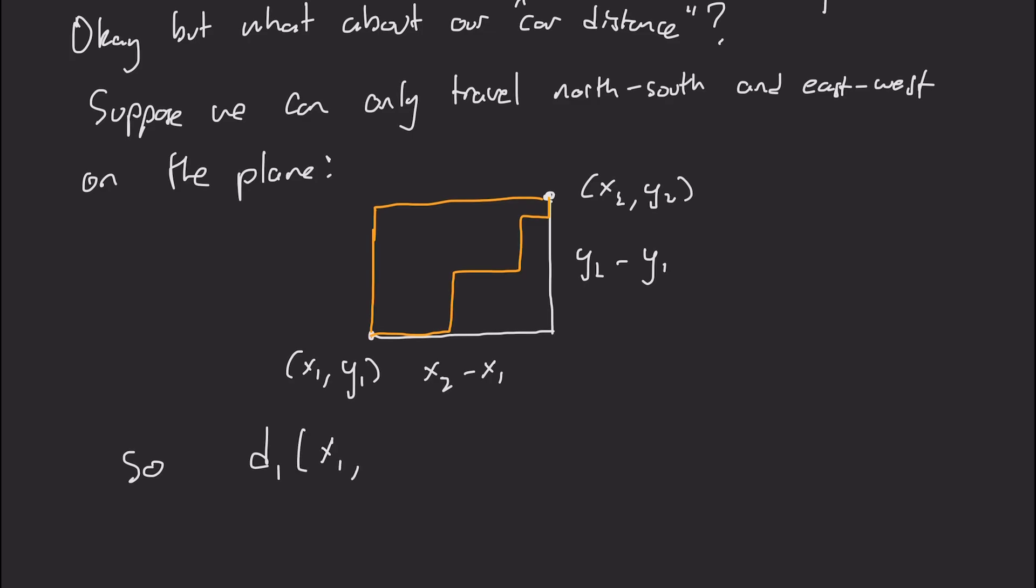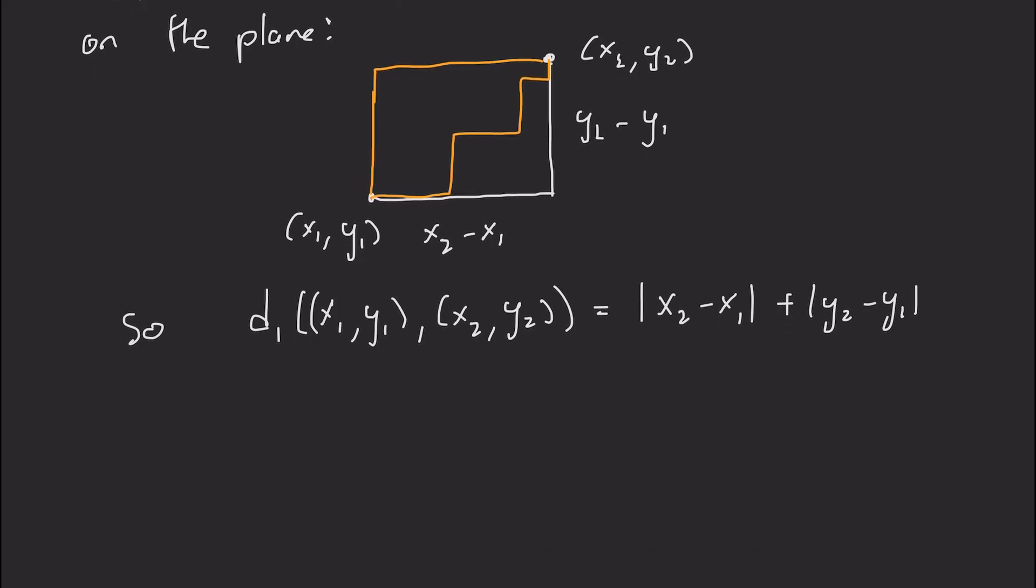So in particular, the distance, I'm going to call it d sub 1, between x1, y1, and x2, y2, is the absolute value of x2 minus x1 plus the absolute value of y2 minus y1.